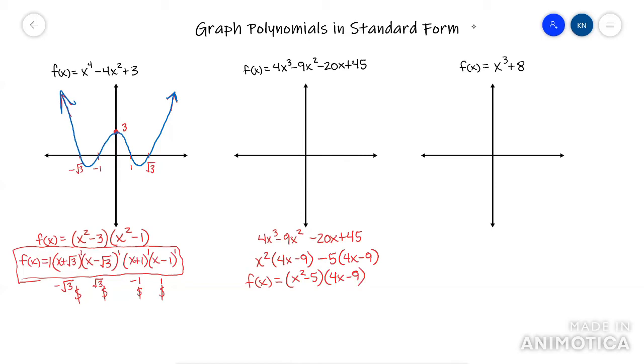Now, again, this is not really fully factored because you still have this x squared right there. So you could even go a little further with this, kind of like the previous problem and just call it a difference of squares. x plus root five, x minus root five.